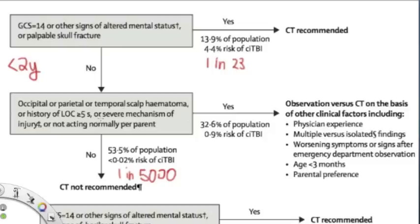Now, if the kid did have some of these things, maybe one of them, then you have two choices. You could either observe them or get a CT. And the choice is based on one of these things: the physician experience, multiple versus isolated findings, worsening symptoms, age less than 3 months, or parental preference.